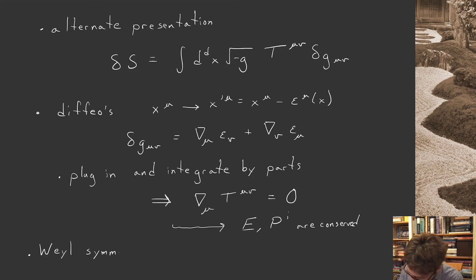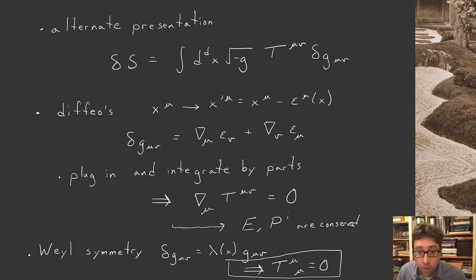Now with Weyl symmetry, the change in the metric is just some local function λ(x) g_μν. I plug this into the change in the action, which has to vanish if this is a symmetry. From this I learn that the trace of the stress tensor must vanish. This is the result we're after. This is special to conformal field theories.